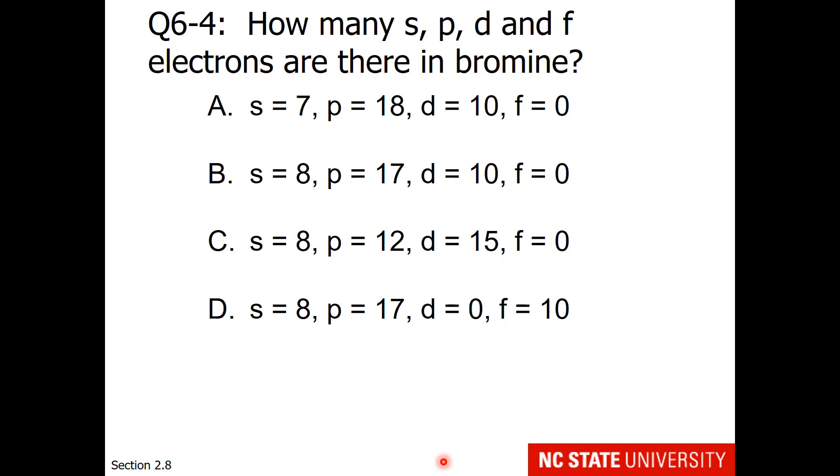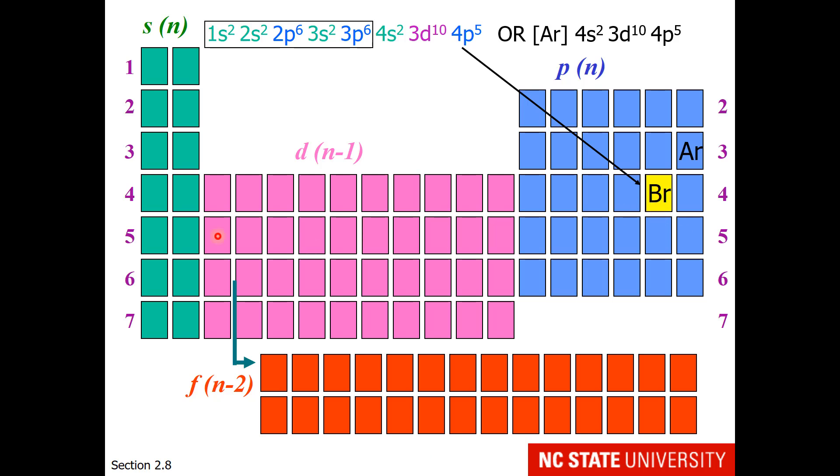So this question asks, how many s, p, d, and f electrons are there in bromine? You could, of course, look at the previous slide and determine the electron configuration and count. I think it's easier to go in blocks. So let me go back to the previous slide. When I look at bromine, it's very easy for me to count how many electrons are being filled in an S block. As far as the p block goes, well, there's a row here, another row here, and 1, 2, 3, 4, 5 in this row to add up. For the d block, we pass through one time on our way to bromine, and we do not pass through the f block. Bromine has an atomic number of 35, so a neutral bromine should have 35 electrons.